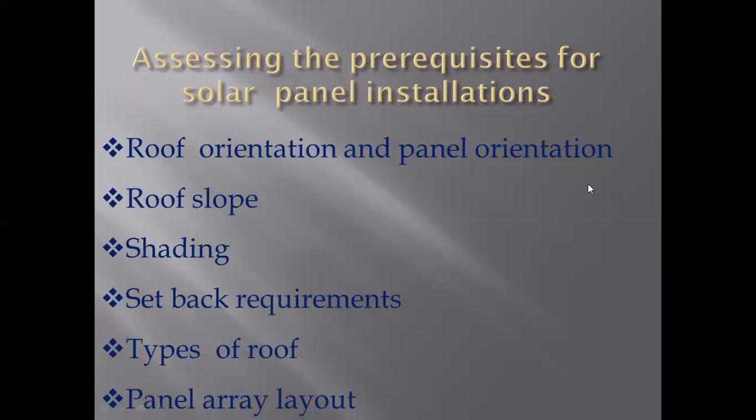Next is shading. Shading means we have to consider shading on the ground and the roof. Building shading affects panel performance, so we have to account for shading losses. We need to avoid building shading as much as possible. Shading results in shading losses.